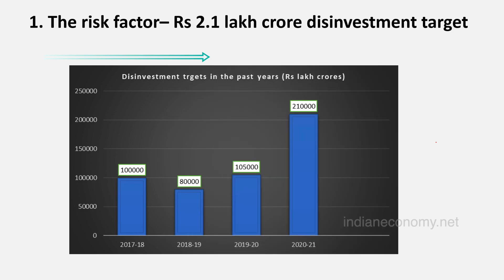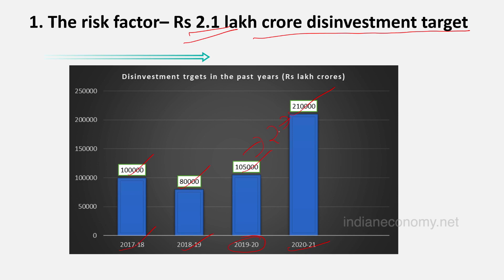The government has set a disinvestment target of ₹2.1 lakh crore rupees, which is quite an unusual figure for a government budget. As you can see from this diagram, the disinvestment target for 2020-21 is ₹2,10,000 crore rupees. In previous years it was ₹1 lakh crore in 2017-18, ₹80,000 crore in 2018-19, and ₹1,05,000 crore in 2019-20. So this year it has nearly doubled from ₹1,05,000 crore to ₹2,10,000 crore.